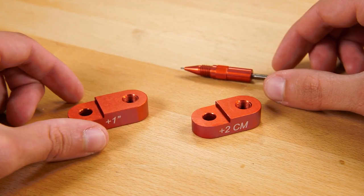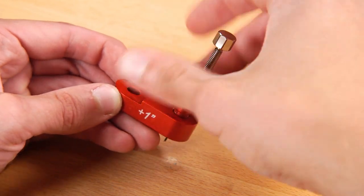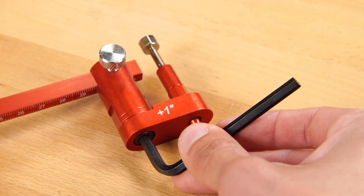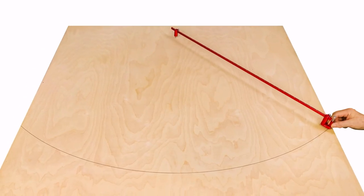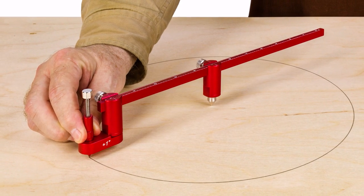The pencil holders are used with the mechanical pencil and offset the clamp by exactly one inch or two centimeters. So now you are set to strike an arc or draw a circle with ease.